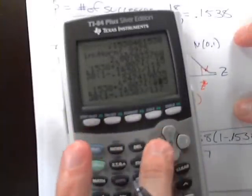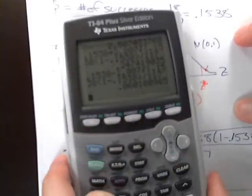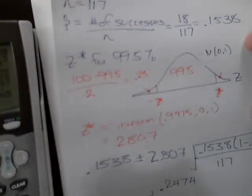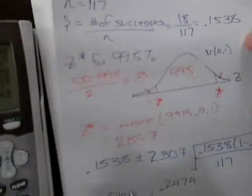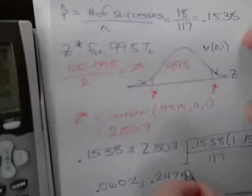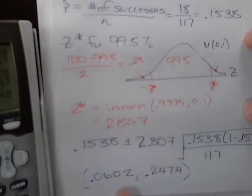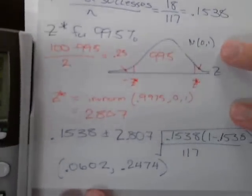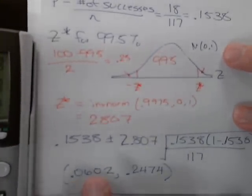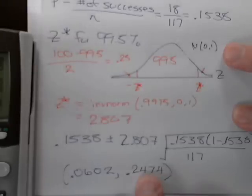Then if I do a second enter, it brings up the previous screen and I'll change this to a minus, giving a left value of 0.0602. So our confidence interval is from 6% to 24-25% or so.